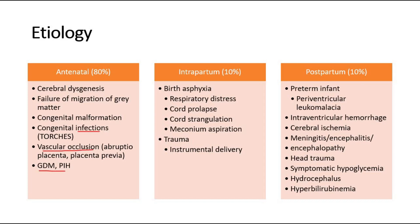For intrapartum causes, it consists of 10% of the cases. The causes are birth asphyxia, also called hypoxic ischemic encephalopathy, which can be due to respiratory distress, cord prolapse or strangulation, or meconium aspiration. Other causes include trauma, such as due to instrumental delivery like forceps or vacuum.